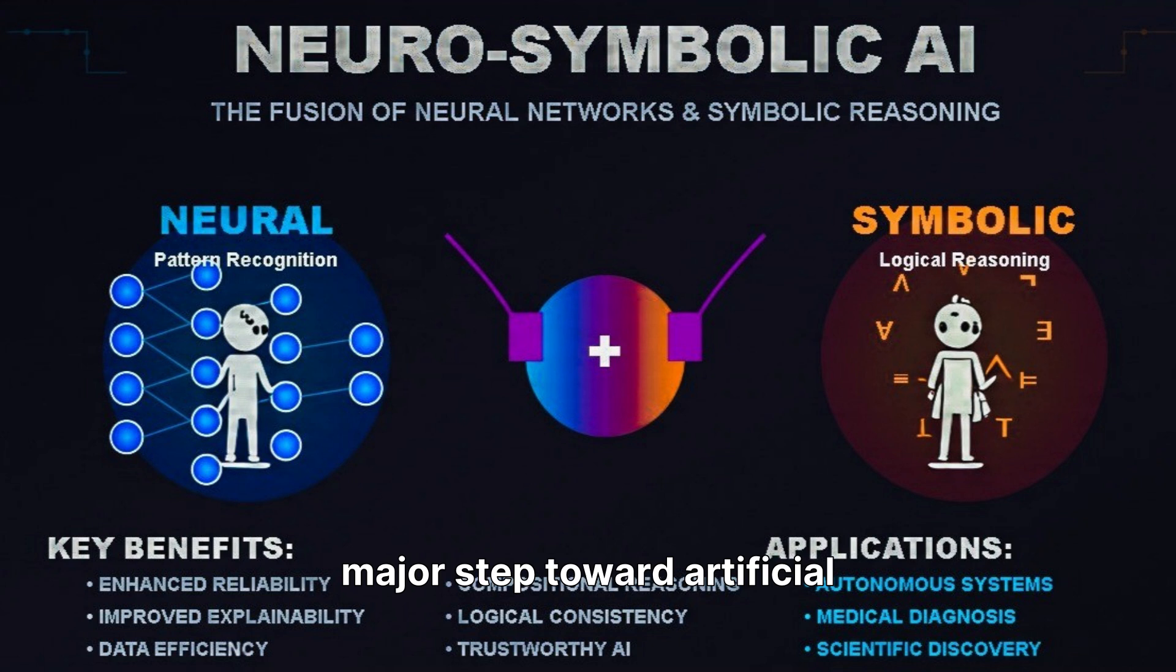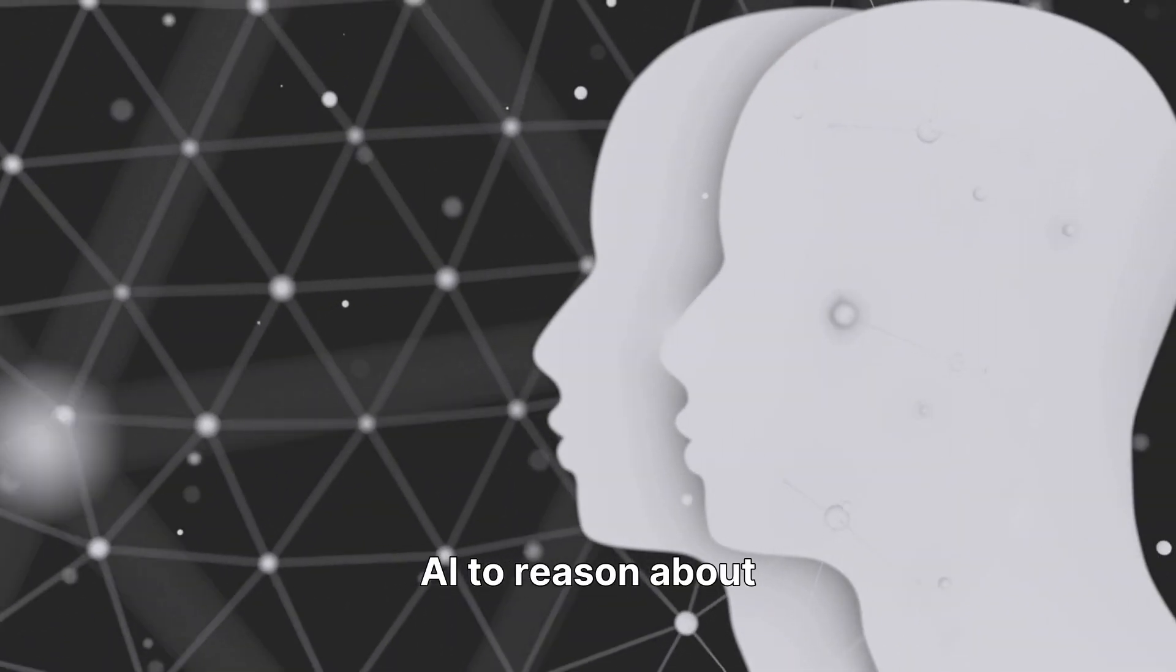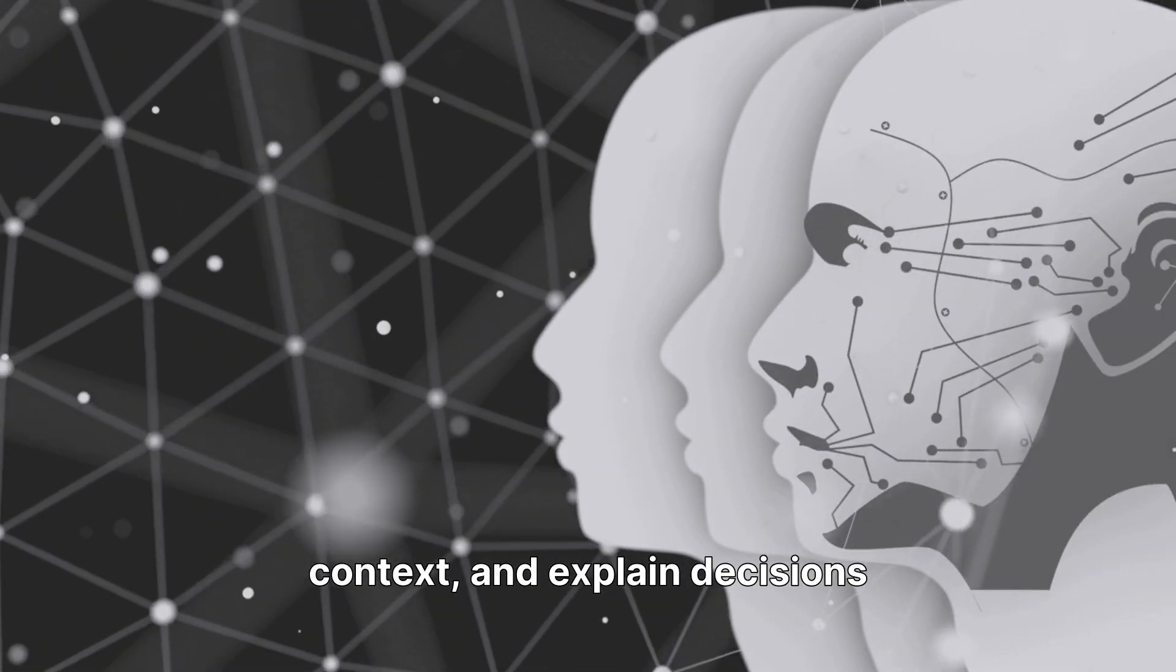Neurosymbolic AI is a major step toward artificial general intelligence, capable of human-like learning and reasoning. By merging perception with logic, it could allow AI to reason about cause and effect, understand context, and explain decisions transparently.